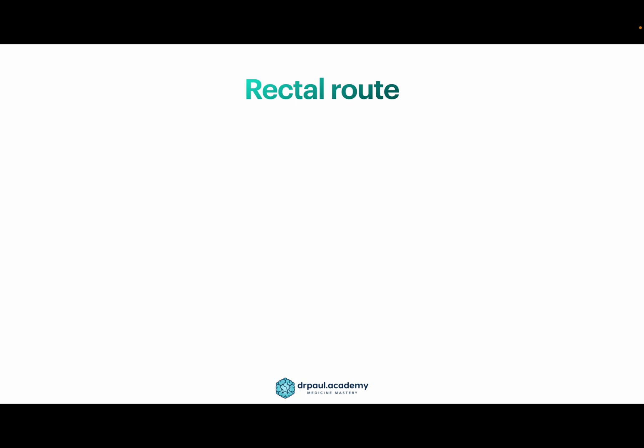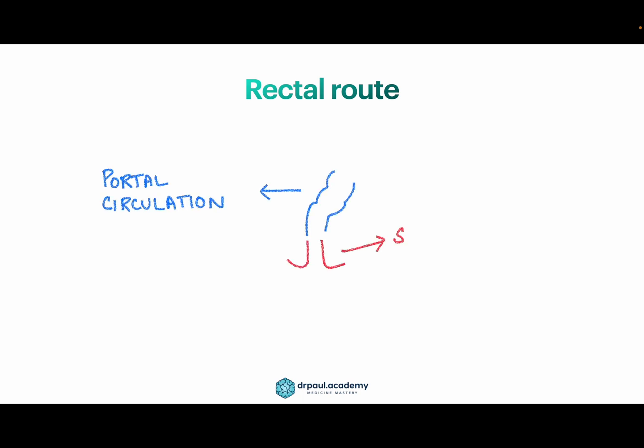The rectal route is particularly interesting because the upper part of the rectum drains into the portal circulation, whereas the lower part of the rectum drains into the systemic circulation. This anatomical difference can change the amount of drug that gets metabolized during first pass.